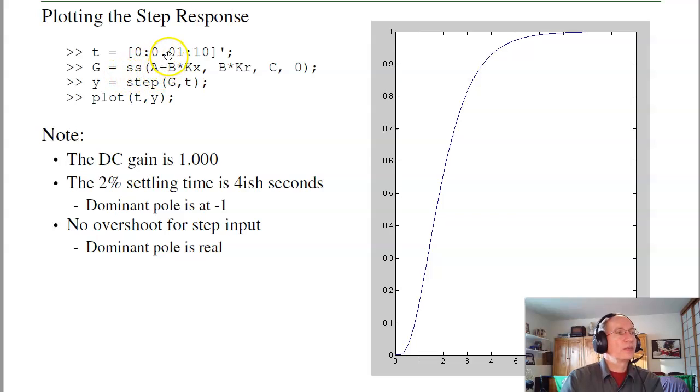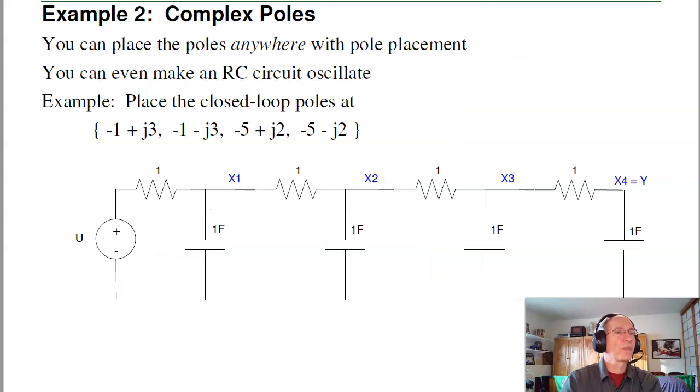And I can check that in MATLAB. If I plot the step response of the closed-loop system, so here's the closed-loop A matrix, closed-loop B matrix, C doesn't change, D doesn't change. Take the step response, I can see I've got no overshoot, and the poles are at minus 1, 2, 3, and 4. The 2% settling time is 4 seconds-ish. It's a little bit longer because my poles at minus 2, 3, and 4 aren't that much faster than minus 1. But that's what a system behaves like where the poles are at minus 1, 2, 3, and 4. So that's one example.